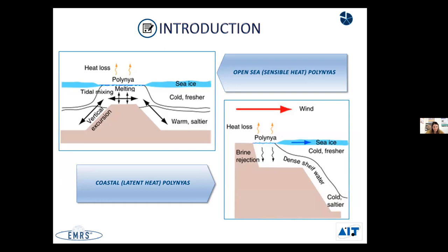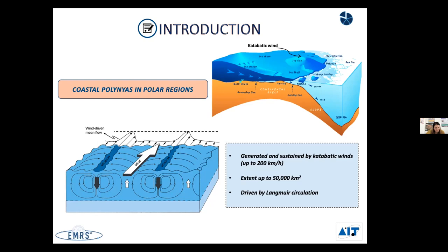Coastal polynyas are generated and sustained by katabatic winds — very cold and intense continental winds — which reinforce the process of freezing sea ice and at the same time drive it away far from the coast. The formation is sustained by a particular oceanic circulation called the along-shore circulation, whose mechanism is shown in this slide.